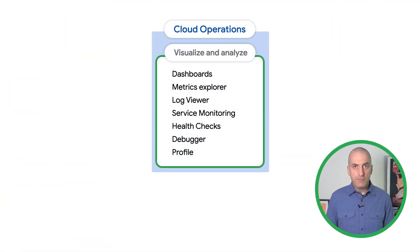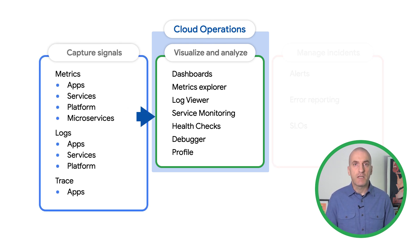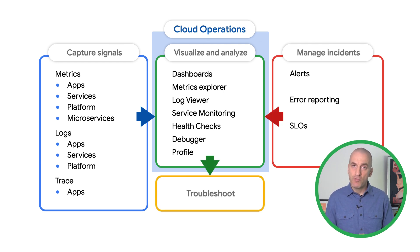This is going to be a lot, but I think you're ready. Let's get into it. Let's start by talking about enterprise best practices. The first recommendation is to centralize monitoring, auditing, and observability data in a single place. For services running on Google Cloud, we recommend using cloud operations to do just that.